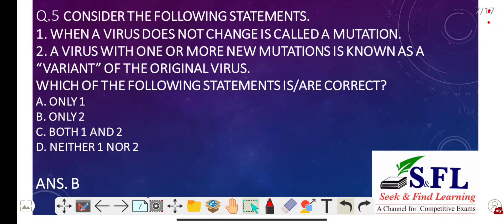Question number five: Consider the following statements. Statement one — when a virus does not change, it is called a mutation. This statement is wrong. Statement two — a virus with one or more new mutations is known as a variant of the original virus. This statement is right. The question asks which statements are correct. The options are only one, only two, both one and two, and neither one nor two. The correct answer is option B, only two.